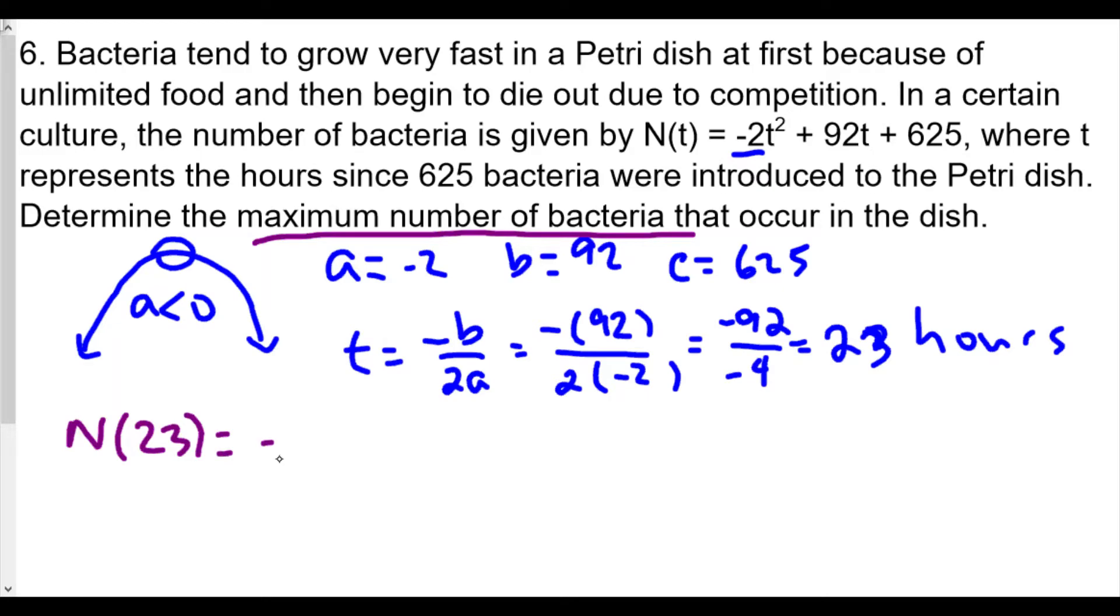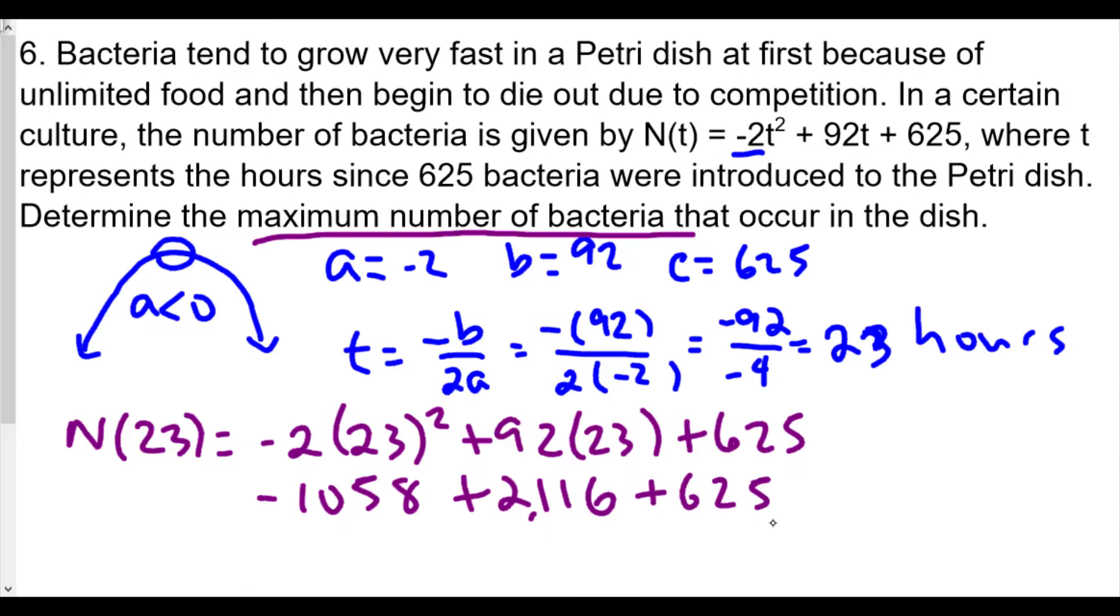To figure out the maximum number, we now need to plug in 23 into our function. So N(23) equals negative 2 times 23 squared plus 92 times 23 plus 625. Let's calculate this. 23 squared is 529, times negative 2 is negative 1058. Then 92 times 23 is 2116. Now we're going to combine 2116 and negative 1058, we get positive 1058, plus 625 means the maximum bacteria will be 1683 bacteria.